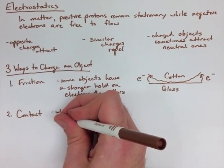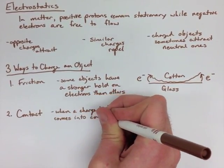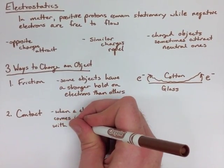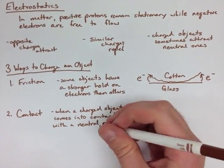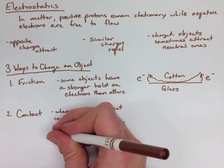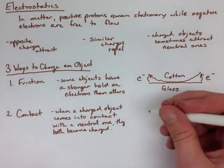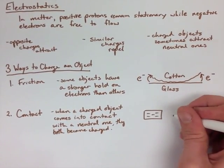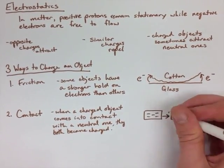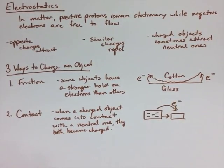The next way to charge an object is just through contact. If we have a charged object coming in contact with a neutral object, both objects will become the same charge as the original charged object. So if we have a negative coming in contact with a neutral object, both objects will become negative, because the electrons are transferred.